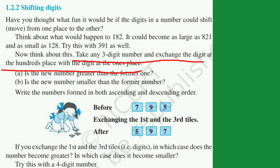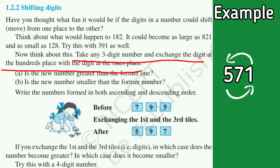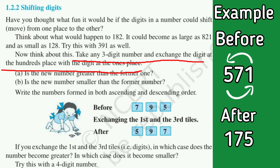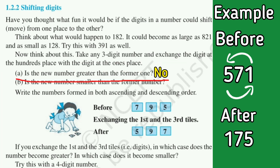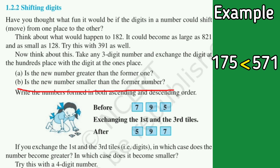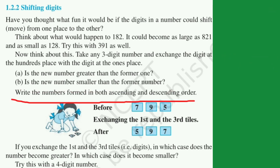Let's take one more example. Take any three-digit number and exchange the digit at hundreds place with the digit at ones place. Let's take 571 as a three-digit number and exchange the digit at hundreds place with the digit at ones place — the tens place will be saved. After exchanging, you will get 175. Is the new number greater than the former one? No, the new number is not greater. The new number is 175 and the former number is 571.